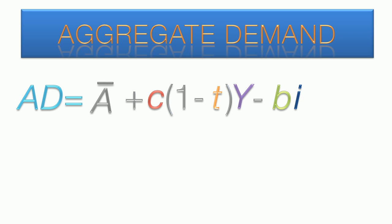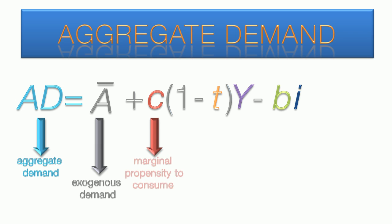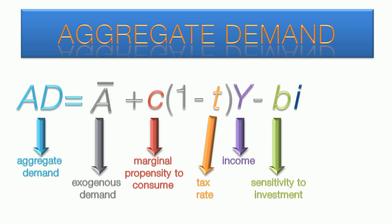Now that we have half the alphabet up here, let's review what everything stands for. AD for aggregate demand, A-bar for exogenous demand, lowercase c for the marginal propensity to consume, lowercase t for tax rate, y for income, lowercase b for interest sensitivity, and i for interest rate. You'll notice that all the lowercase variables are rates between 0 and 1.